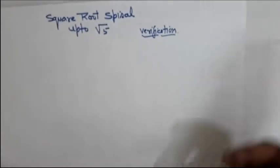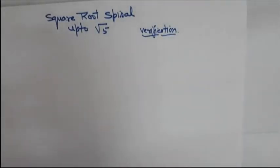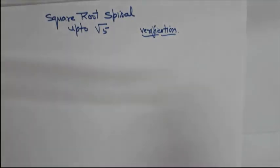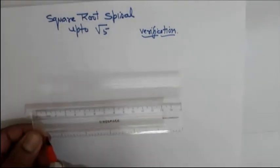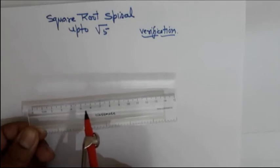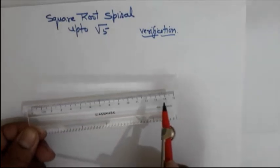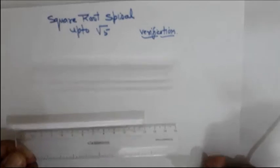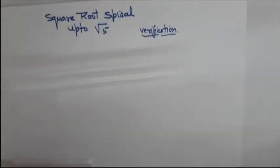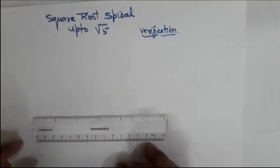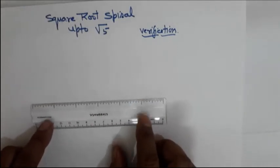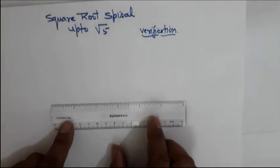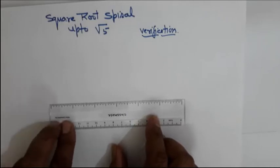One important thing in making the square root spiral: you can draw it in centimeters or in inches. But the centimeter units are very small, so the result will not be much clear. It is better to make the square root spiral with the help of an inch scale.